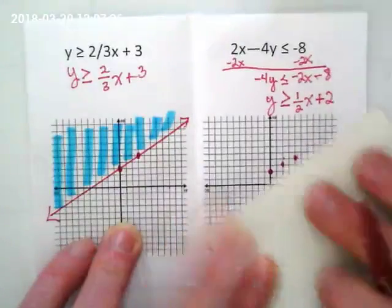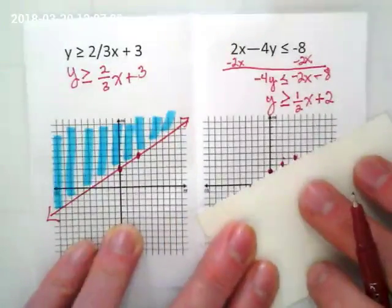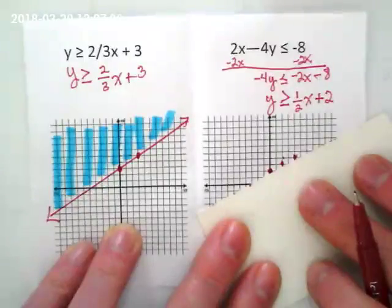Get your straight edge and make the line. But before you make the line, you have to decide if it's going to be solid or dashed. Solid.